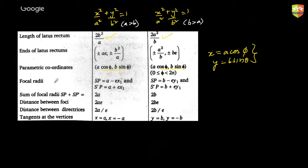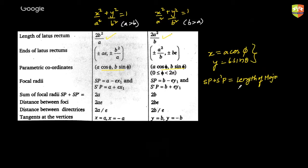Focal radii: the distance of any point from one focus is SP = a − ex₁, and from the other focus it is a + ex₁. For type 2 (b > a), it is b − ey₁ and b + ey₁. In either case, SP + S'P equals the length of the major axis — that is 2a or 2b. This is actually another locus definition of an ellipse.